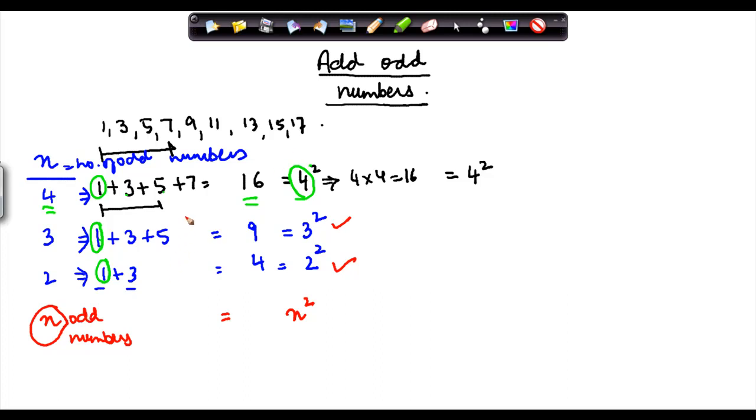So through this analogy we can say that sum of first n odd numbers, where n is the number of odd items, is equal to n squared.